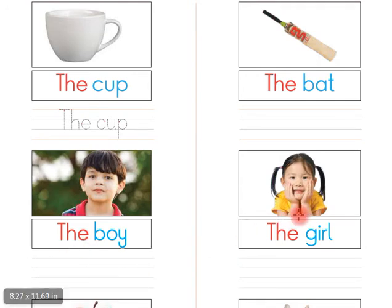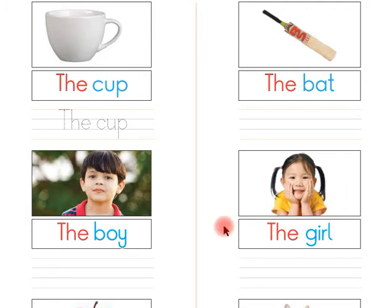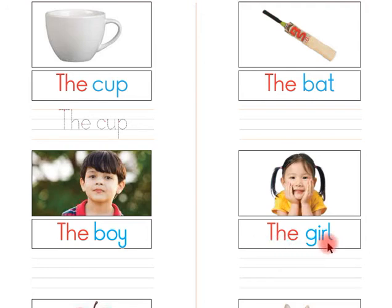Look at this, children: the girl. Listen again, children: the girl. Listen one more time, children: the girl. Now say with me, children: the girl. Say again, children: the girl. Let's read this, children: the girl. Read again, children: the girl.